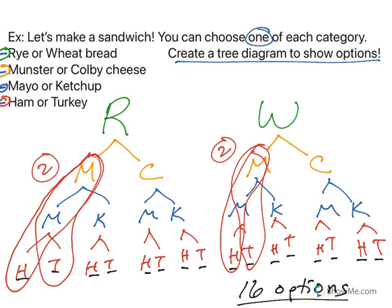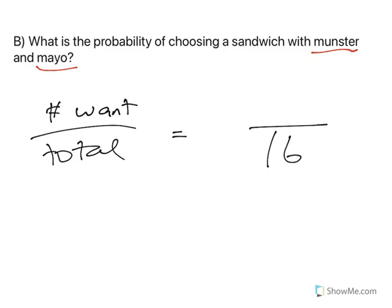Do you see that? Munster, mayo, Munster, mayo, and ham, Munster, mayo, turkey, and on rye, right? So we have four out of 16, which is one fourth or 0.25 or 25%. So that's the probability of choosing a sandwich with Munster and mayo.